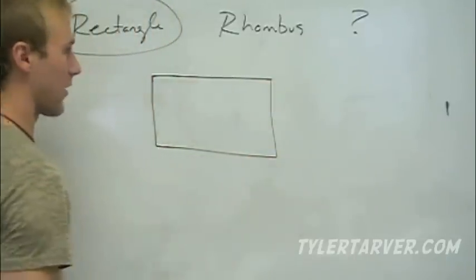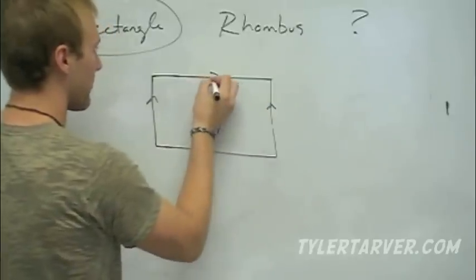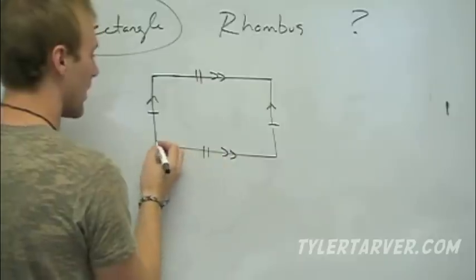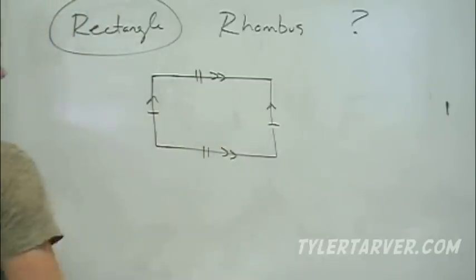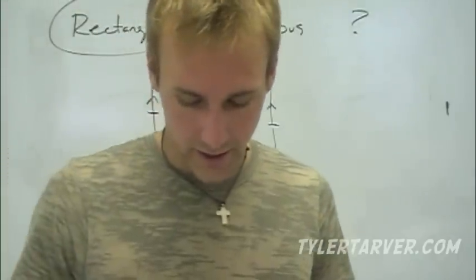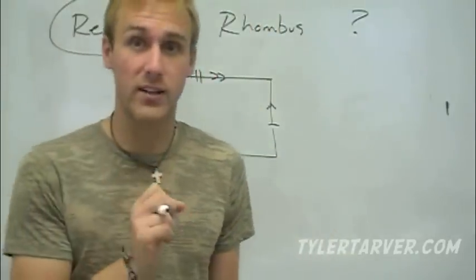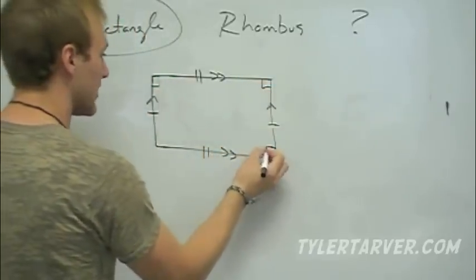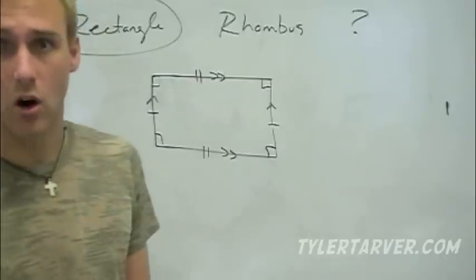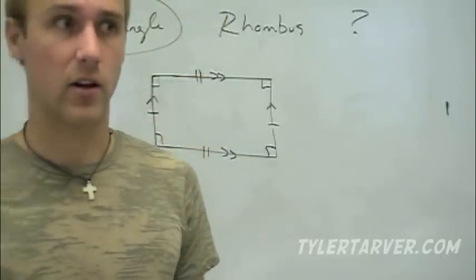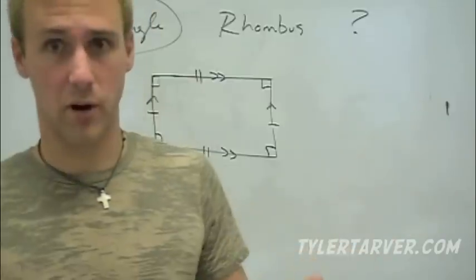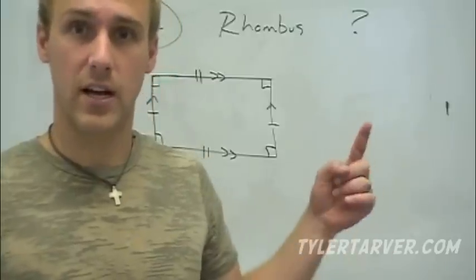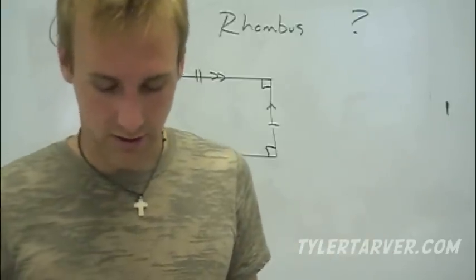A rectangle is a parallelogram — opposite sides are parallel, opposite sides are congruent, opposite angles are congruent, diagonals bisect each other, and so on. Here are the two things that separate a rectangle from everything else — this is what makes it special. It's got right angles. Every single angle in there is a right angle, 90 degrees. That's why your piece of paper is a rectangle — all those corners are perfect 90-degree angles. 90 plus 90 plus 90 plus 90 equals 360, just like any quadrilateral.